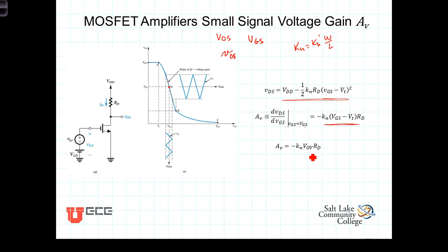The gain term is also proportional to the overdrive voltage. The greater the overdrive, the greater the gain. And finally, the gain term is proportional to R_D. The larger this resistor is, the greater the gain of the amplifier will be.